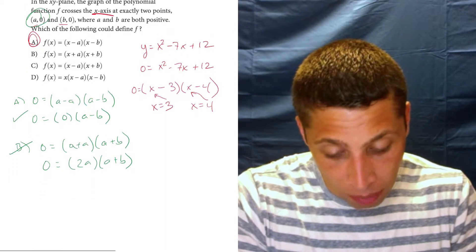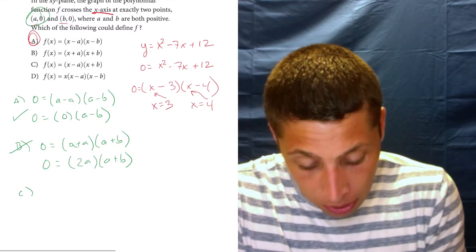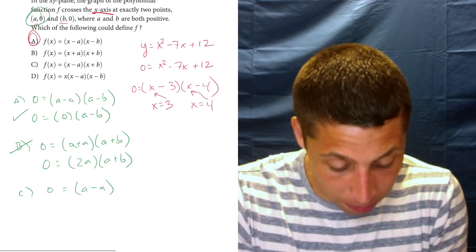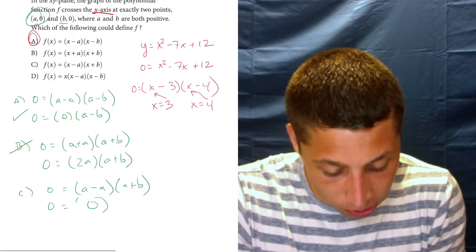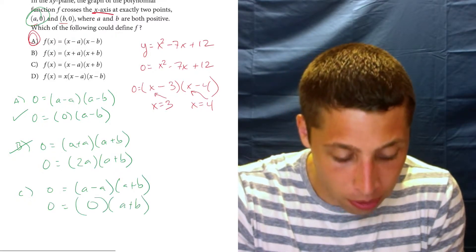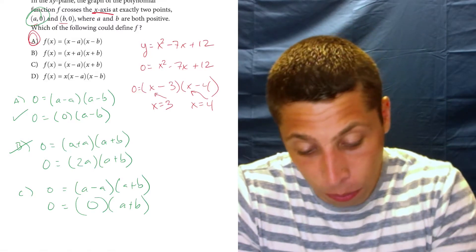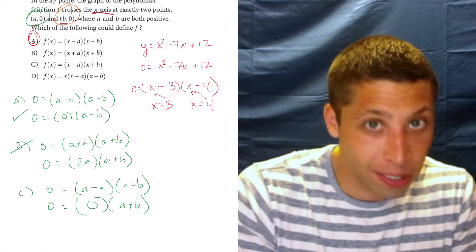Now, c is where we have a little bit of a problem because it does still work. a minus a times a plus b, this is still 0. But what should we do? Well, we have another point. Try the other point.